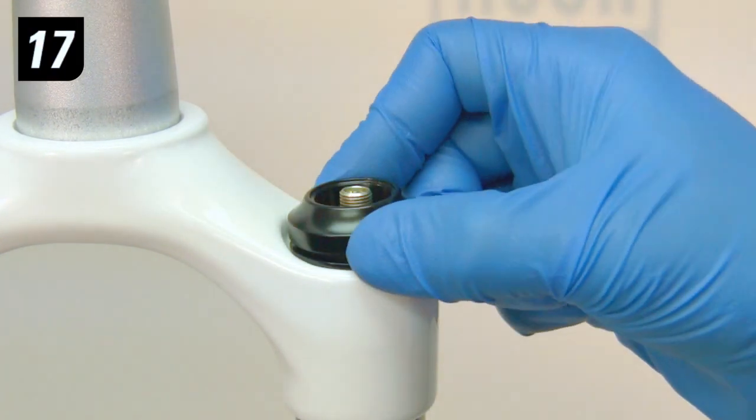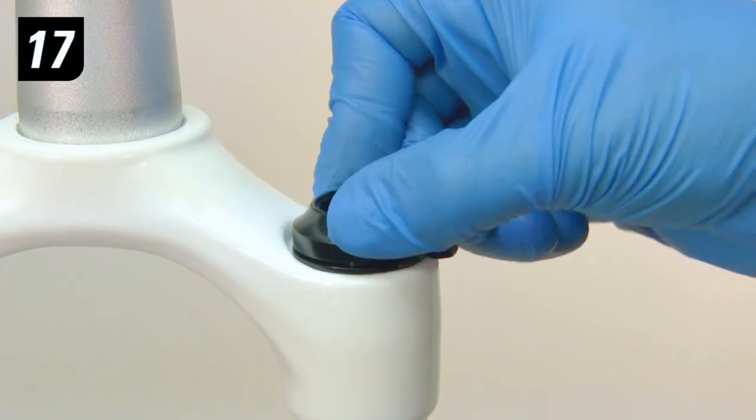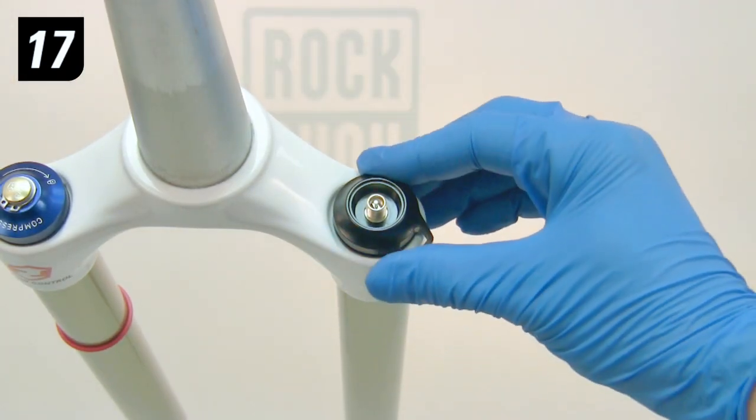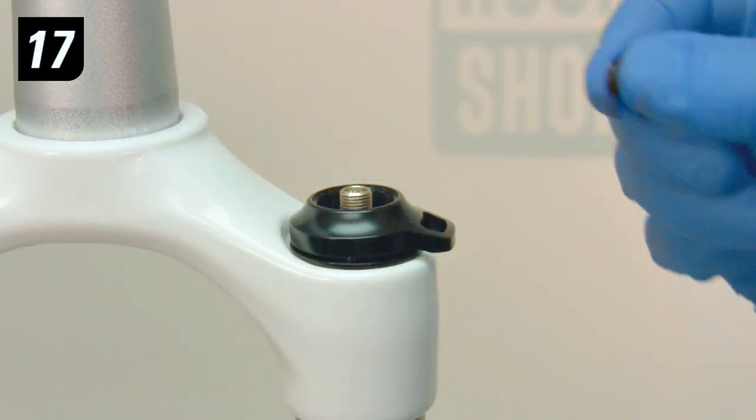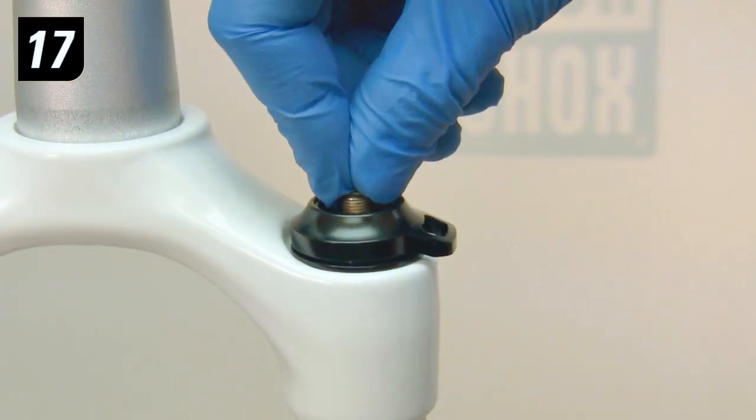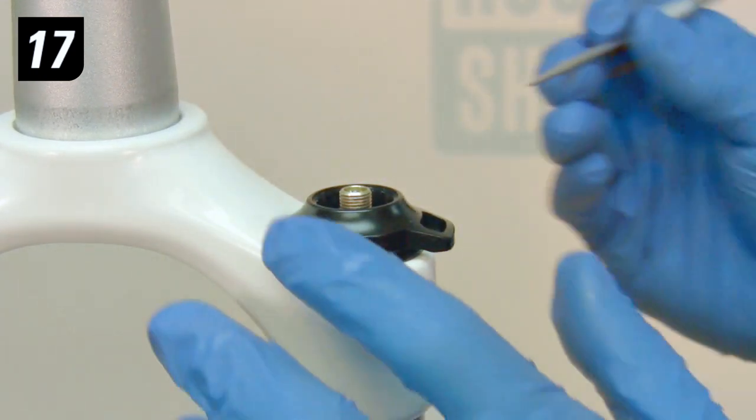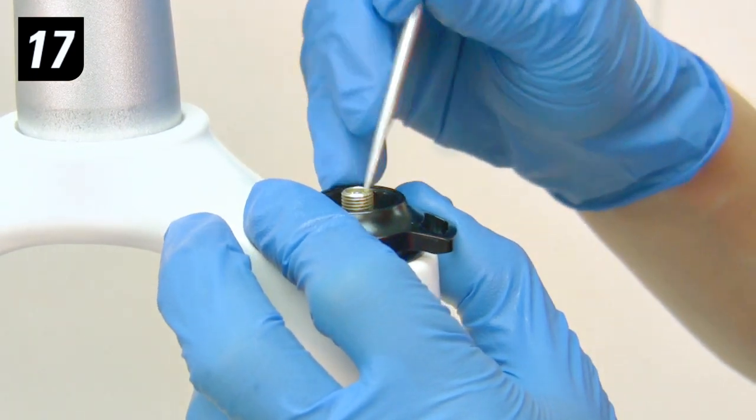Step 17. Install the travel adjust knob onto the top cap so that the knob can rotate through its full range of adjustment. Install the adjuster retention O-ring onto the air valve and use a pick to push it all the way to the bottom of the travel adjust knob.